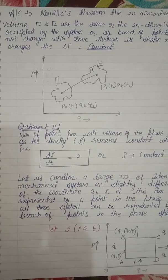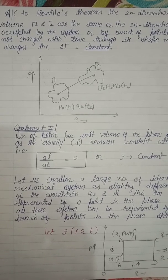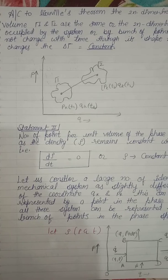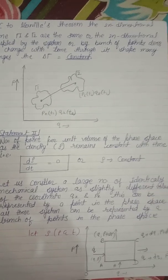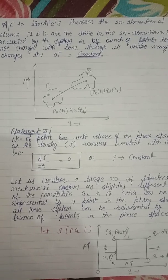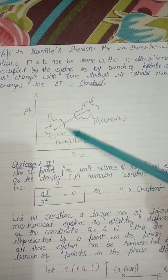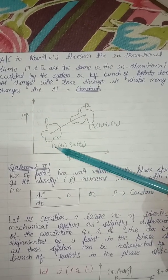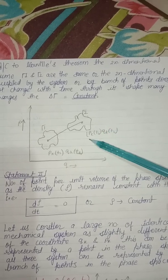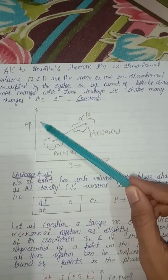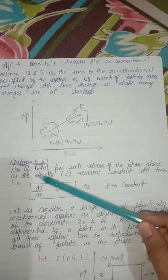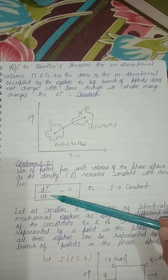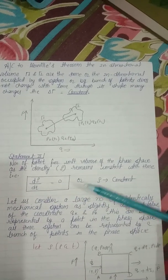Today we will discuss Liouville's theorem. According to Liouville's theorem, the two-dimensional volume occupied by a system, or a bunch of points, does not change with time, though its shape may change. I draw two systems in Liouville's theorem — the first system and the second system — with coordinates Q_k and P_k at times T1 and T2. The statement is: the number of points per unit volume of phase space, i.e., the density ρ, remains constant with time, meaning ∂ρ/∂t = 0.